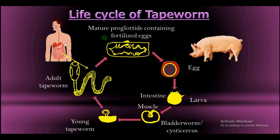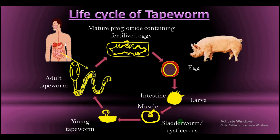A summary of the life cycle of tapeworm: the life cycle begins in the small intestine of man as fertilized eggs. The fertilized eggs are then taken in by the pig when it feeds on food in the soil. The eggs move to the intestine of the pig where they develop to form the larva. The larva then migrates through the wall of the small intestine of the pig to the muscles of the pig, where it forms a cyst around itself to form the bladderworm.